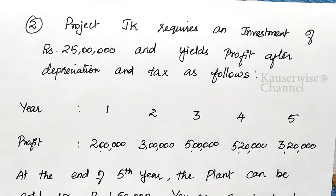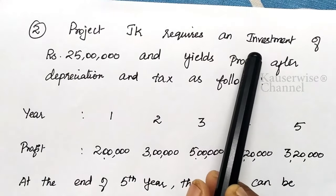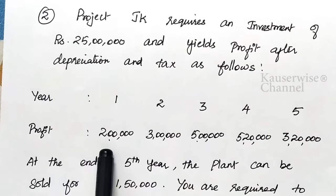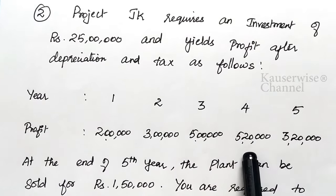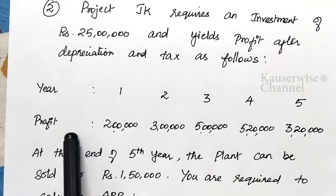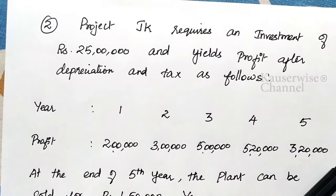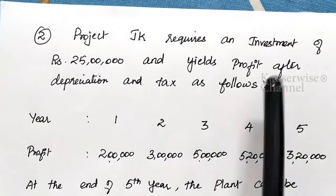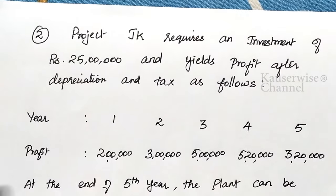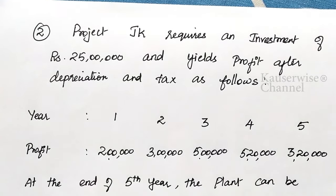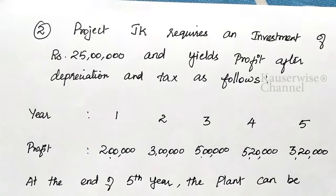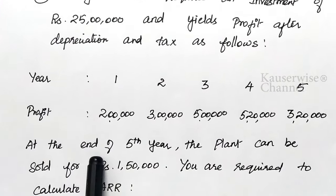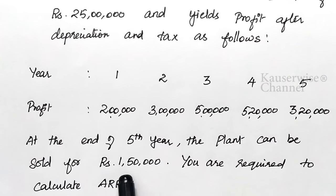Now let us see the second problem. Project JK requires an investment of rupees 25 lakhs and yields profit after depreciation and tax for 5 years: 1st year 2 lakhs, 2nd year 3 lakhs, 3rd year 5 lakhs, 4th year 5,20,000, and 5th year 3,20,000. At the end of the 5th year, the plant can be sold for 1,50,000 — this is the salvage or scrap value.